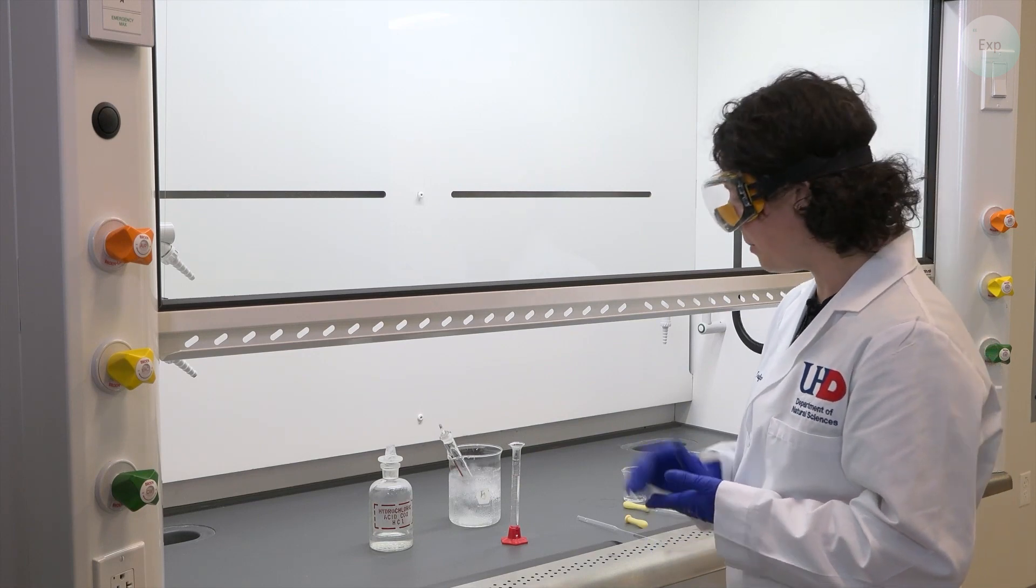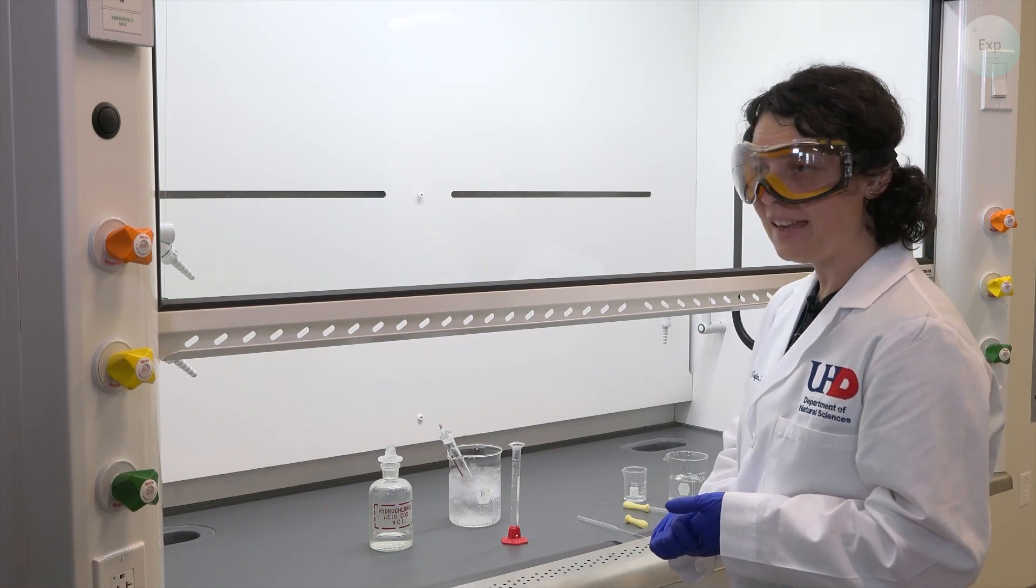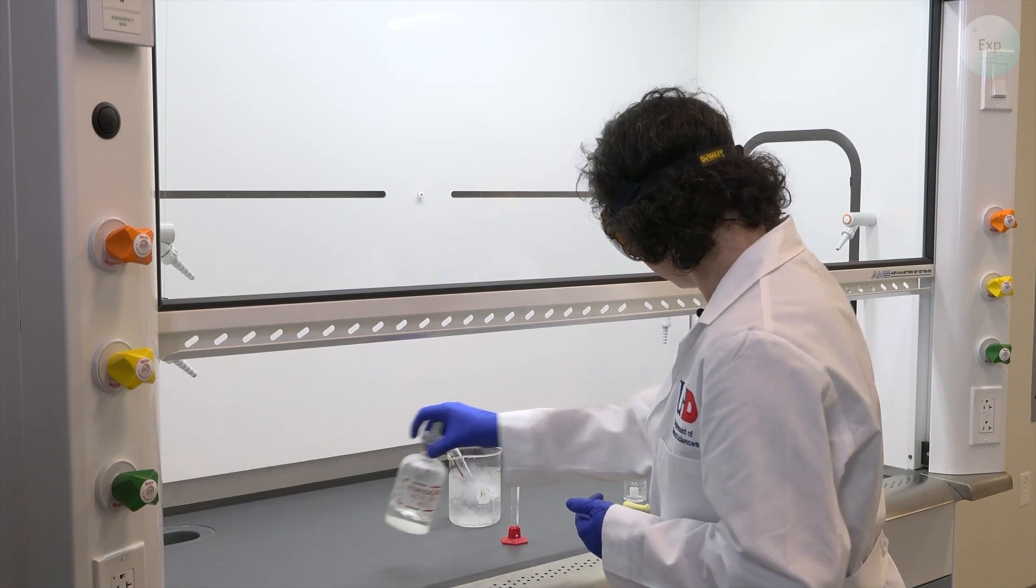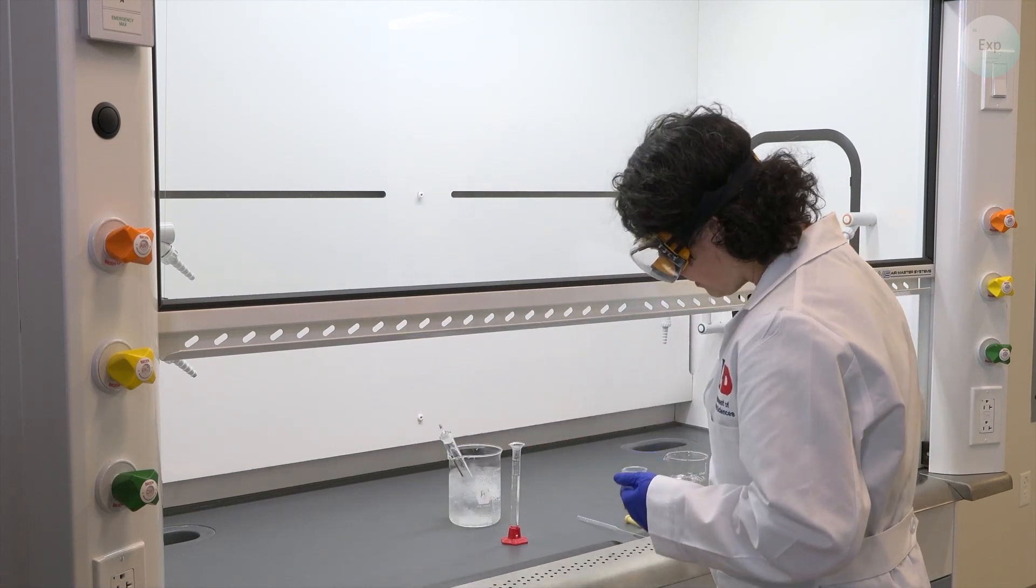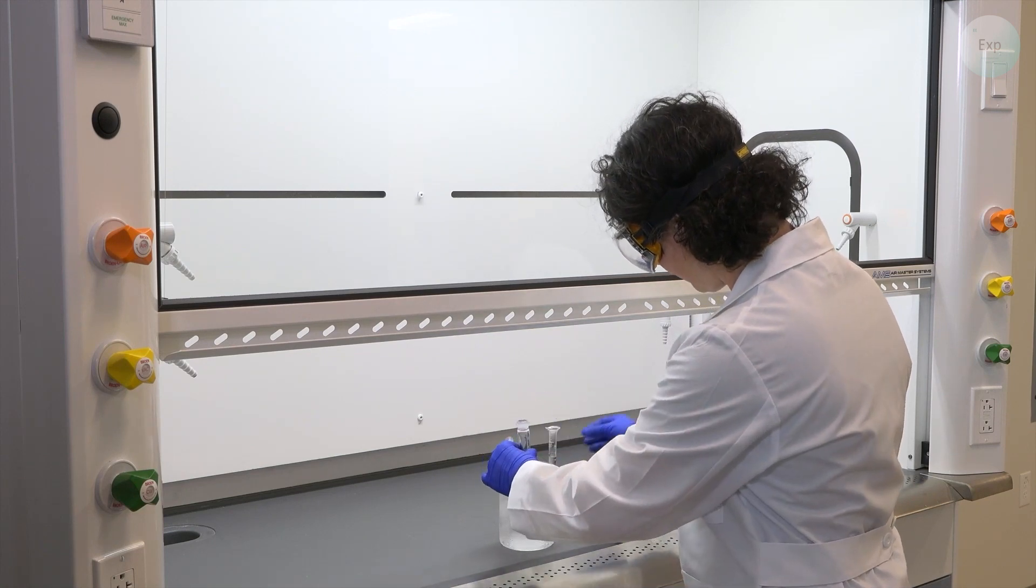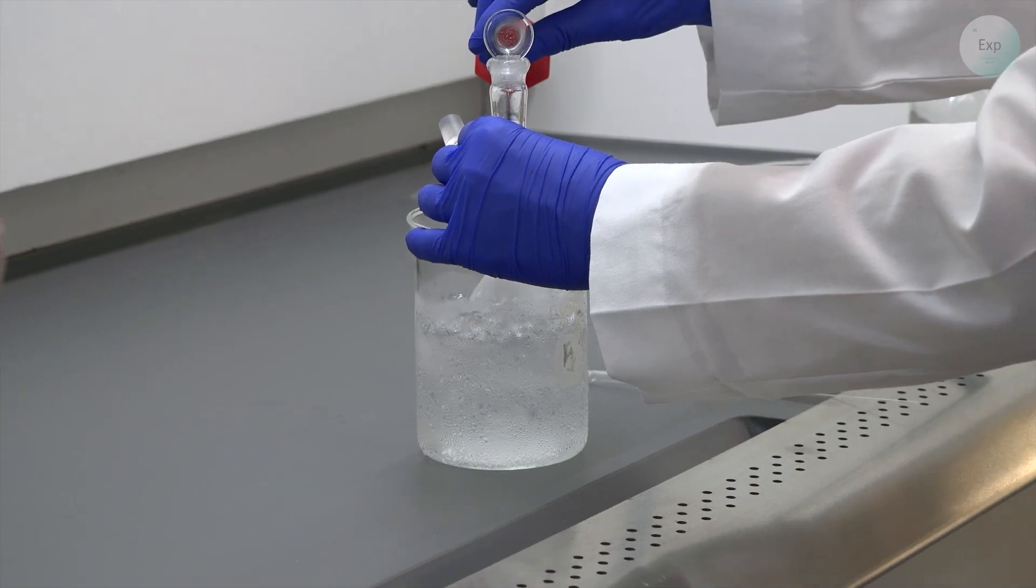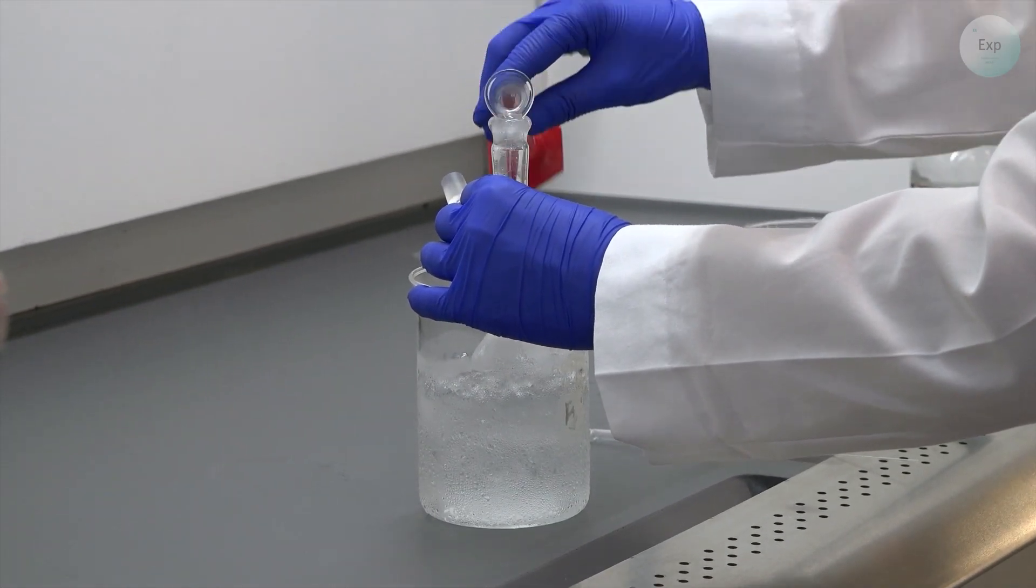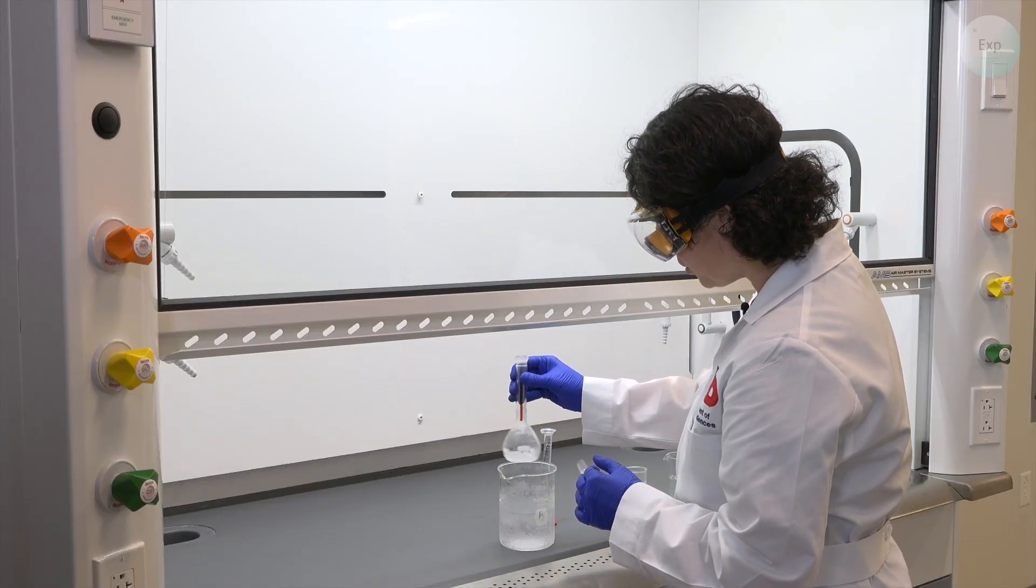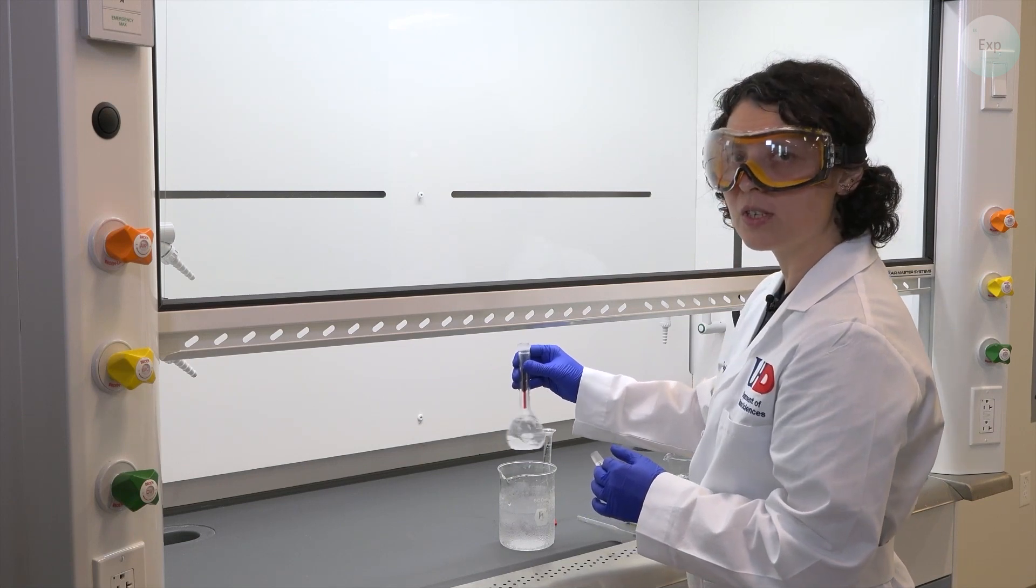I am done with measuring out 8.47 milliliters of concentrated hydrochloric acid. And now I can add it to my volumetric flask that has the water in it. The addition should be done in small increments. And every addition should be followed by some vigorous swirling to make sure that the solution is homogeneous.